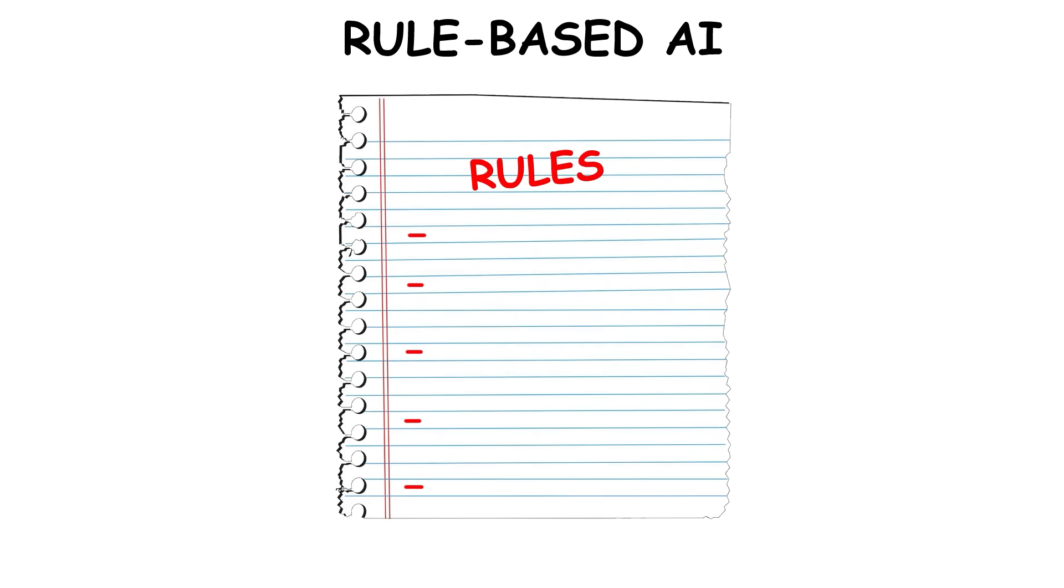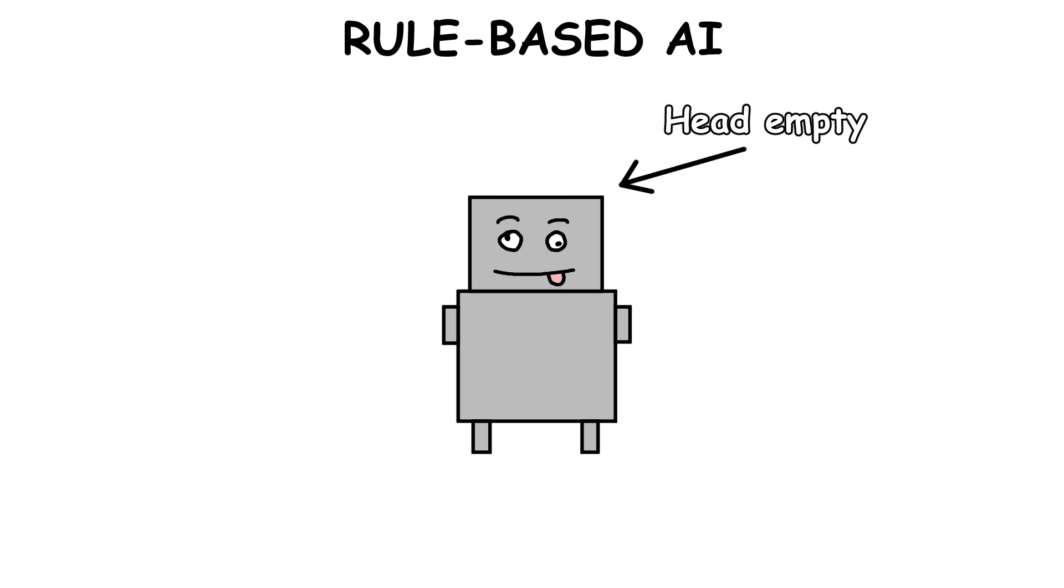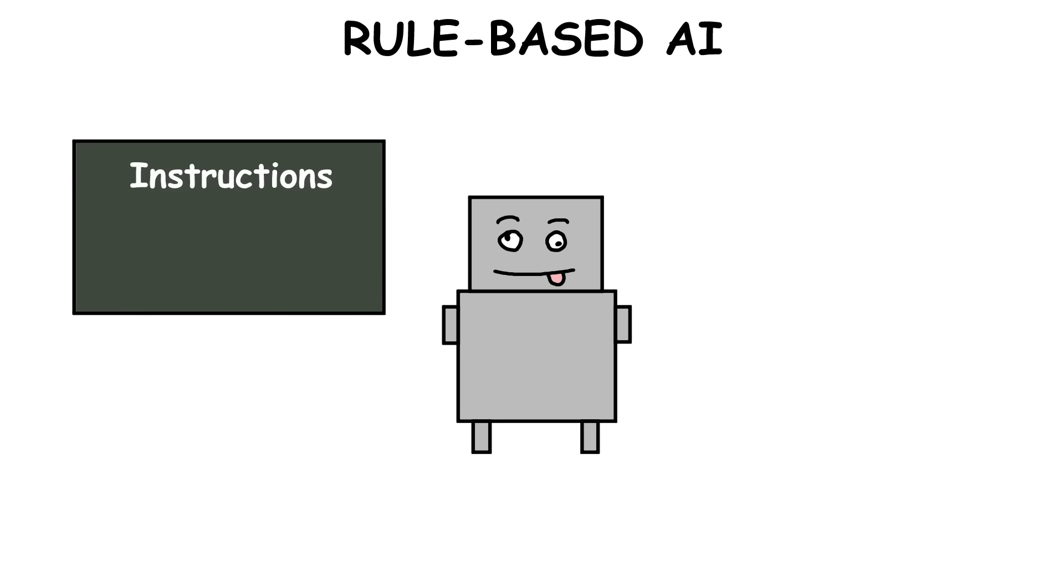Rule-based AI. A rule-based AI is pretty simple. It doesn't learn or adapt over time. Instead, it just follows a fixed set of instructions it was given from the start.